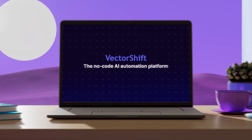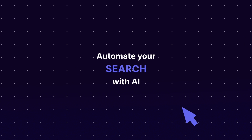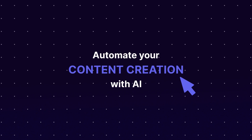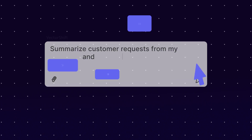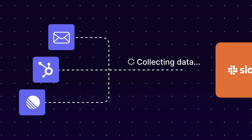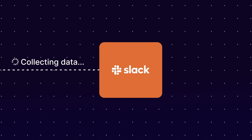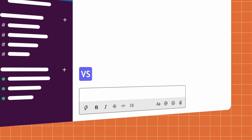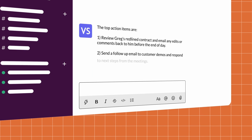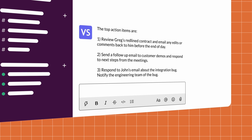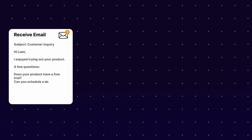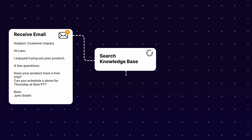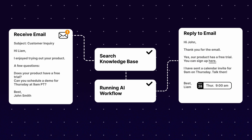VectorShift is a workflow automation platform, which means we can do a lot more than just creating chatbots. We could set up a cron job to run our automation daily, which will do some sort of research on our behalf and then post results to something like Slack. Or we could set up a trigger on our email, which then uses AI to respond to our emails on our behalf.